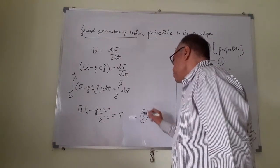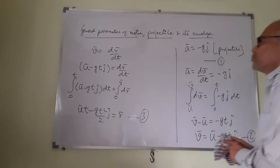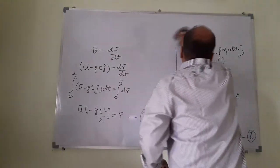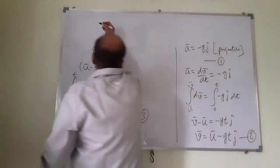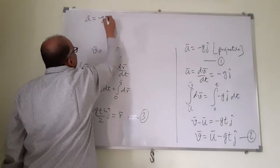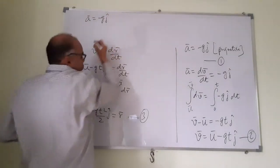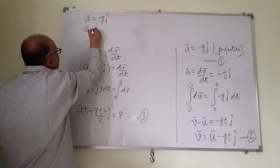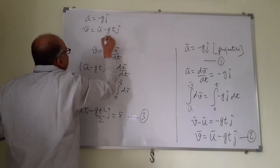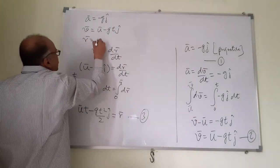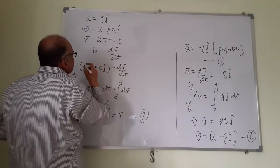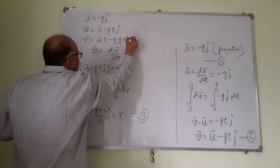So summarizing, the three equations are: a = −gj; v = u − gtj; and r = ut − ½gt²j.